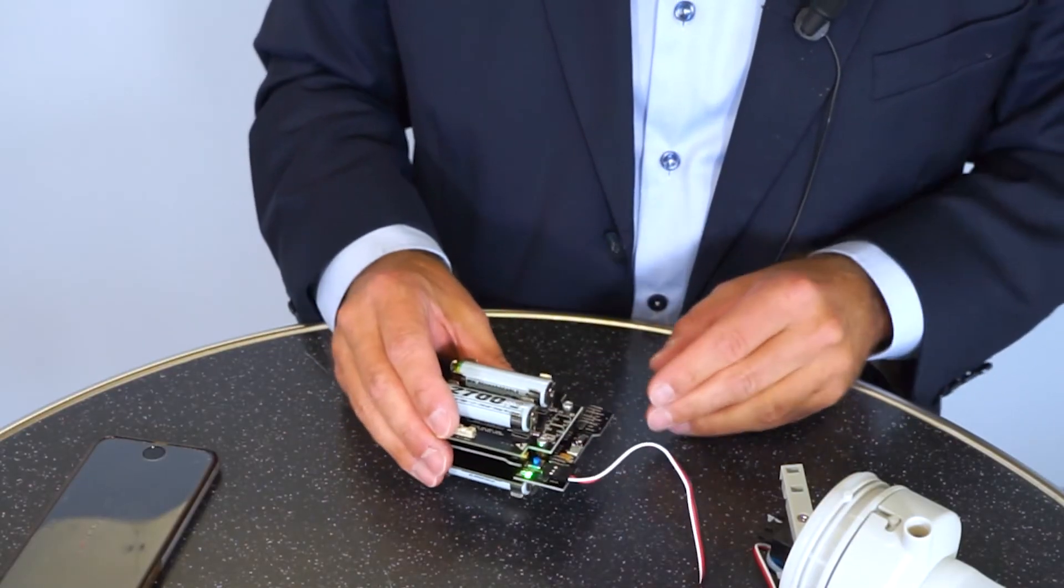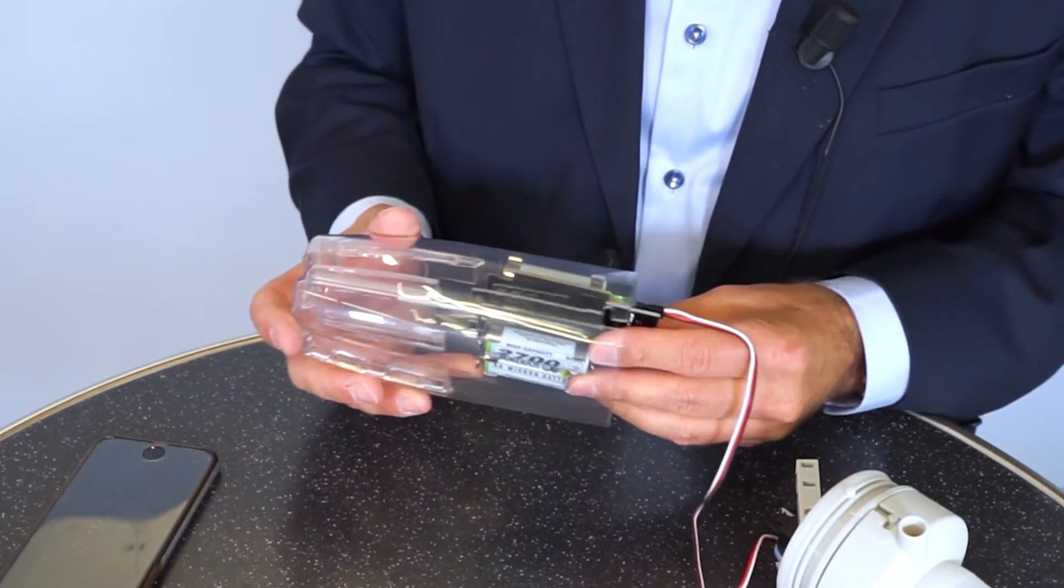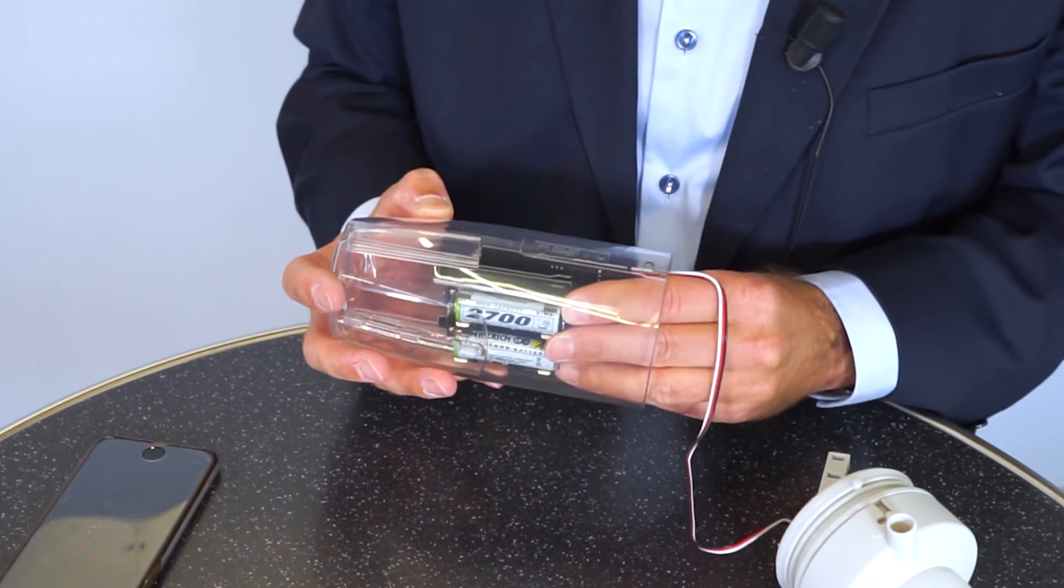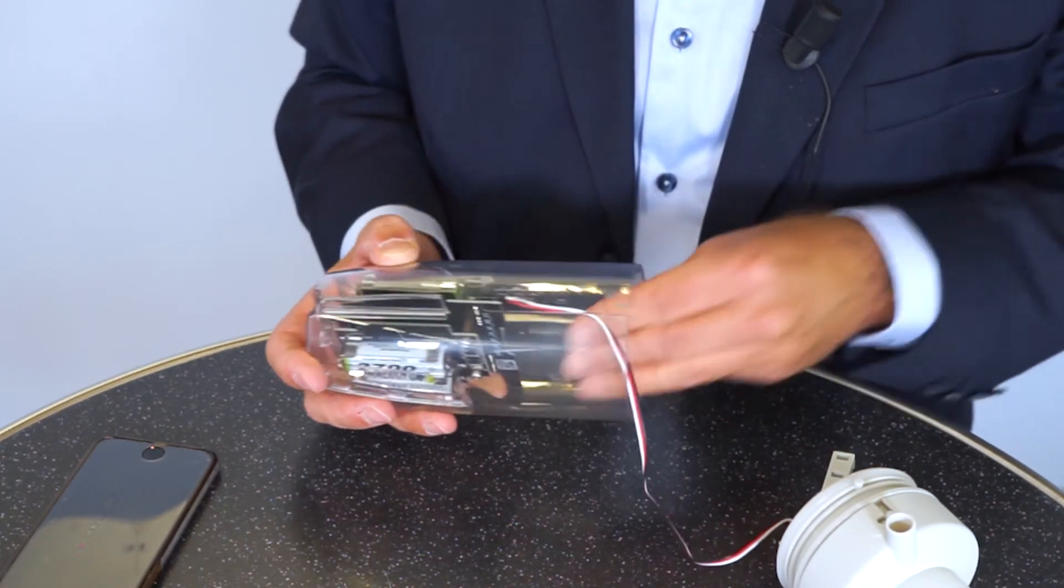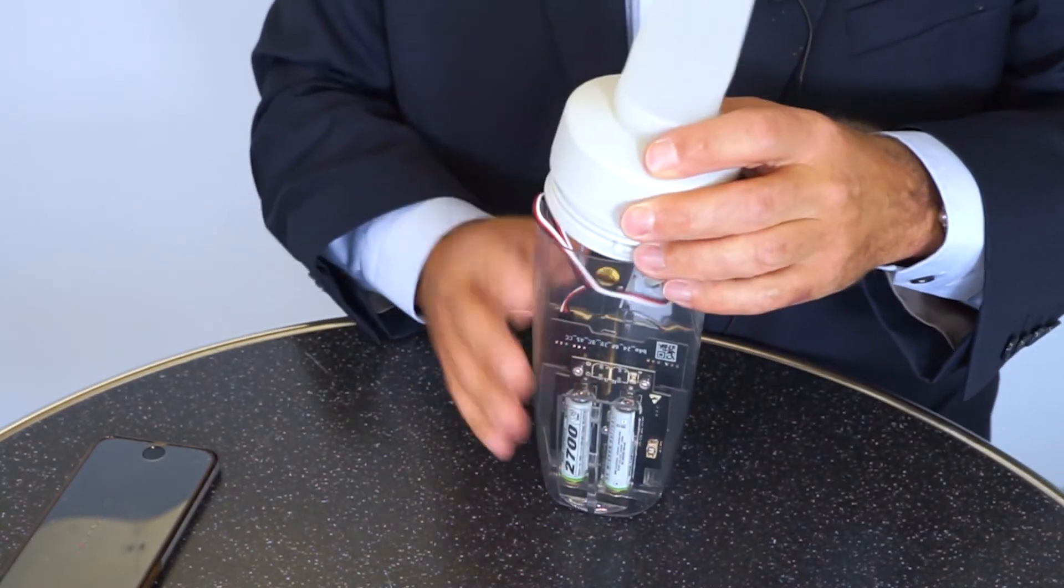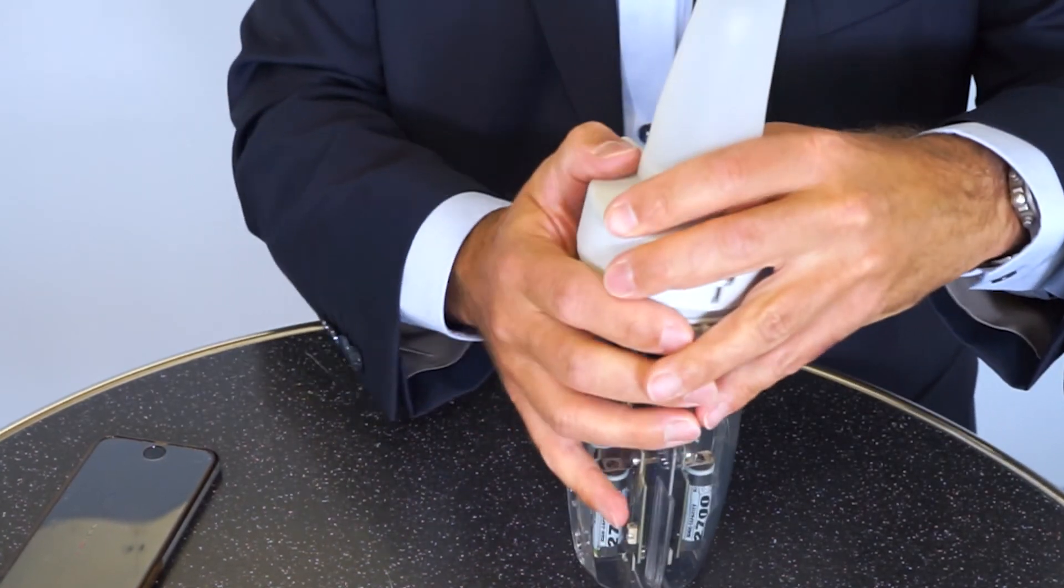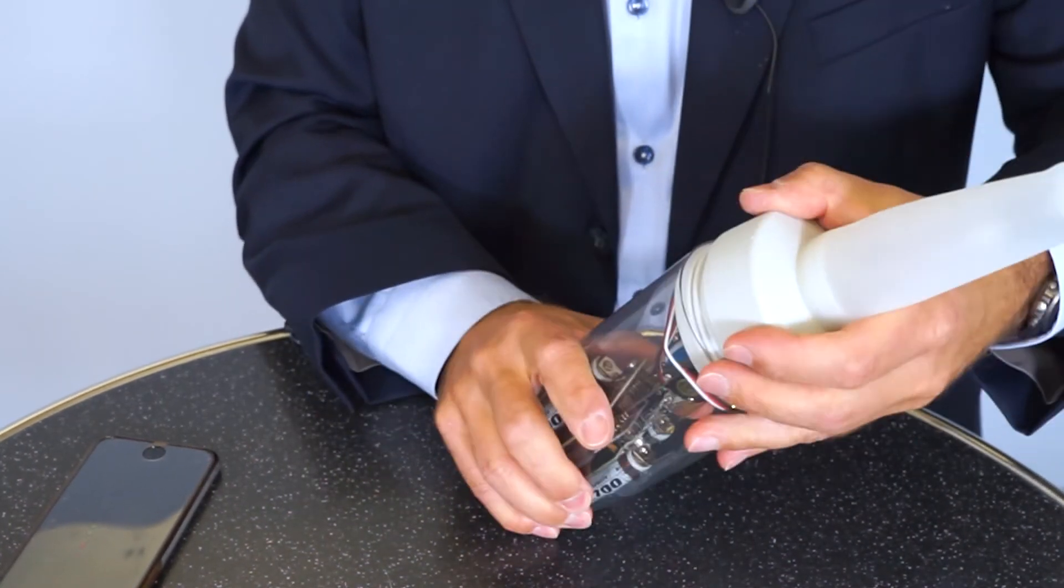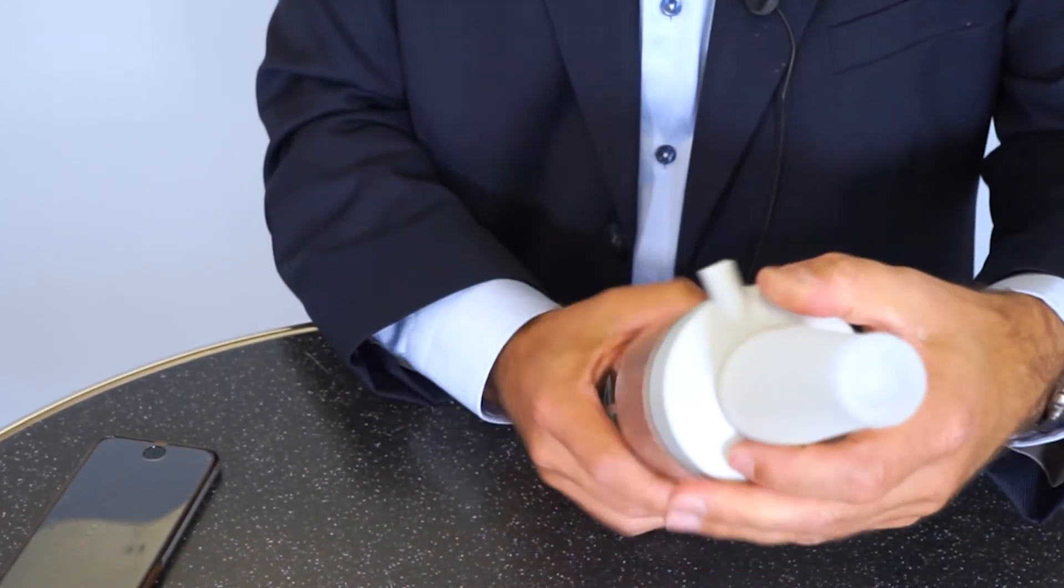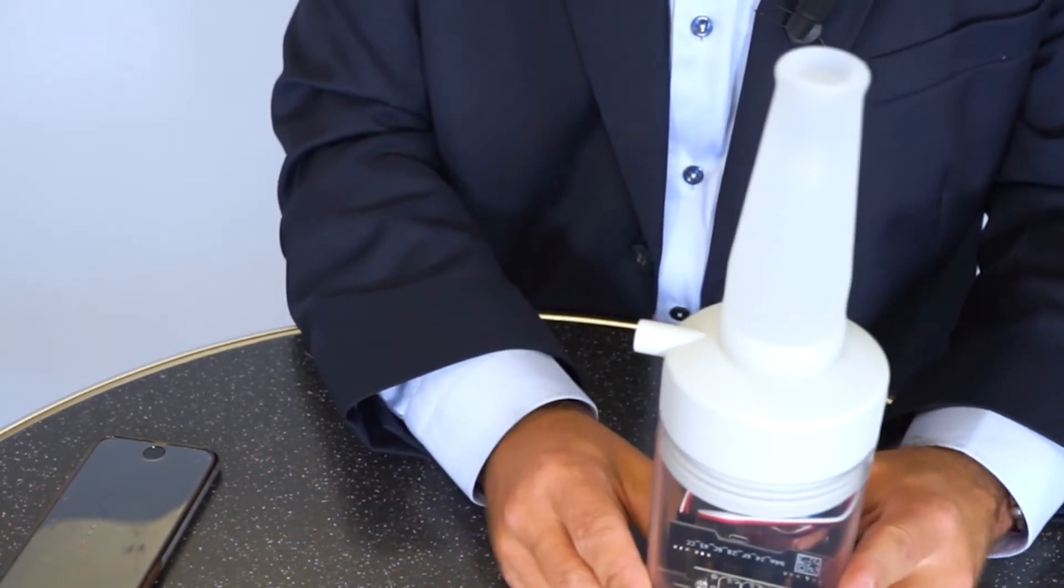Now that we know that the controller works, we can finalize the assembly. We put the controller back into the body. There are rails in the body which lead the controller and hold it in position. Then we put the cable in, and use the same mechanism to connect both parts. Carefully putting this together. Have a look on the sealing. Looks fine. Turn it. So now we are ready with the assembly.